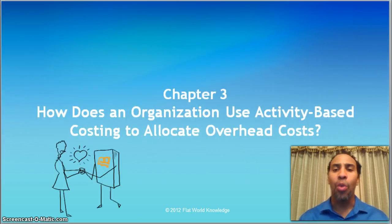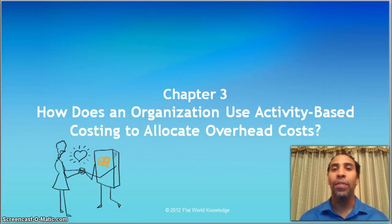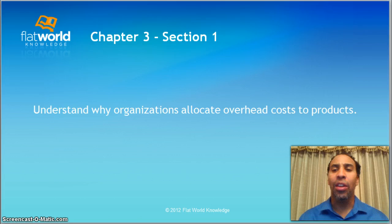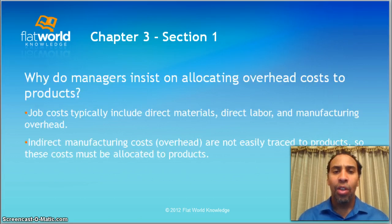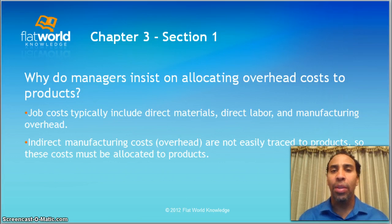So let's start. Chapter three: how does an organization use activity-based costing to allocate overhead costs? There are various ways to allocate overhead costs. Activity-based costing is one that companies are very fond of because they can recognize operational inefficiencies and see what departments and parts of their organization are doing well. Job costs typically include direct materials, direct labor, and manufacturing overhead — something we've gone over in the last two chapters. Indirect manufacturing costs or overhead are not easily traced to products, so these must be allocated to the actual products.